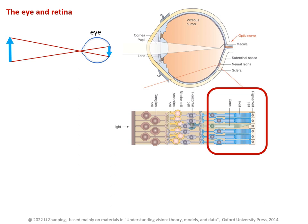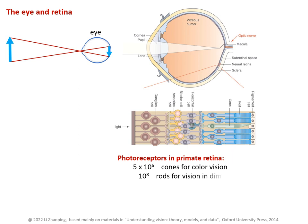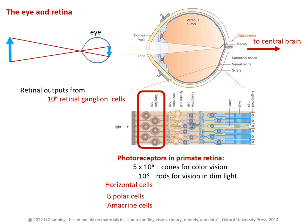In a primate retina there are millions of cones responsible for color vision and even more rods for vision in dim lights. Signals from these photoreceptors are then processed by horizontal cells, bipolar cells, and amacrine cells. Finally, the retinal ganglion cells send the retina outputs to the central brain by the optic nerve.